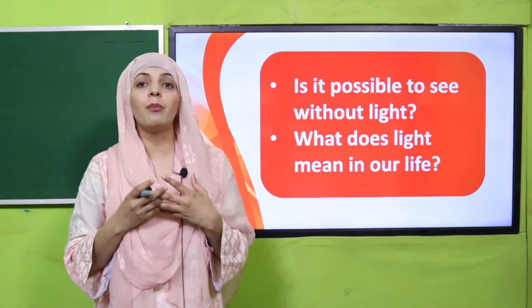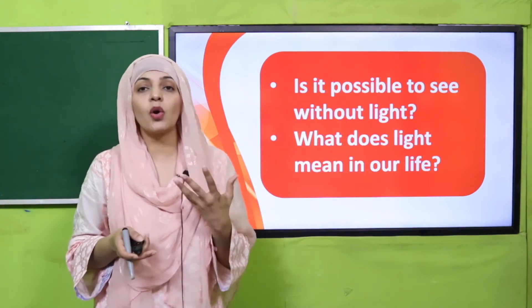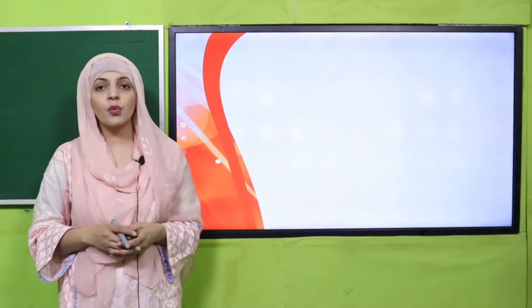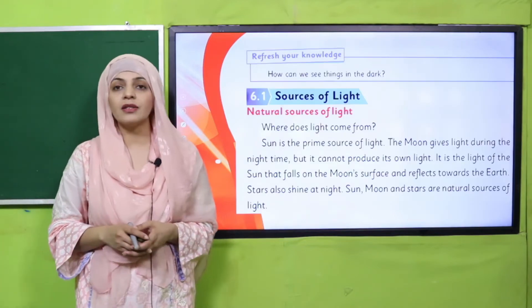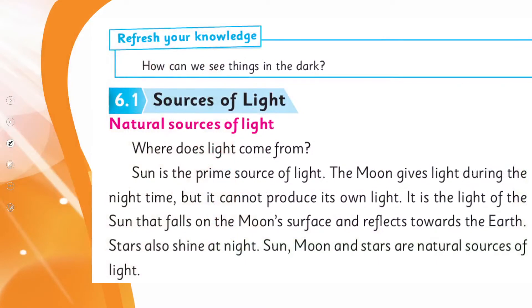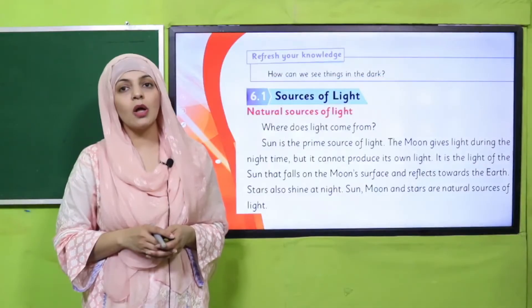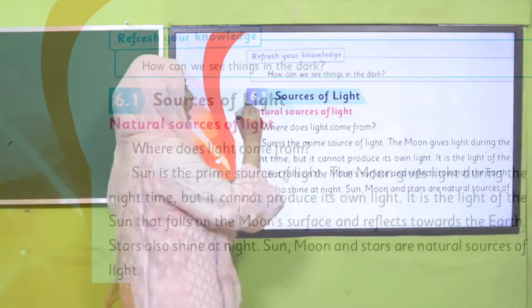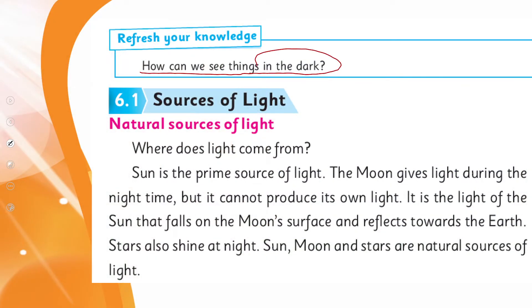My dear students, let's move forward towards the reading. Please open 'Sources of Light' in your Science 5 book, chapter number six. I hope everybody has opened the page. Put your fingers where I will read. But before that, quickly tell me: how can we see things in the dark? No, we cannot see in the dark — we need light to see around us.